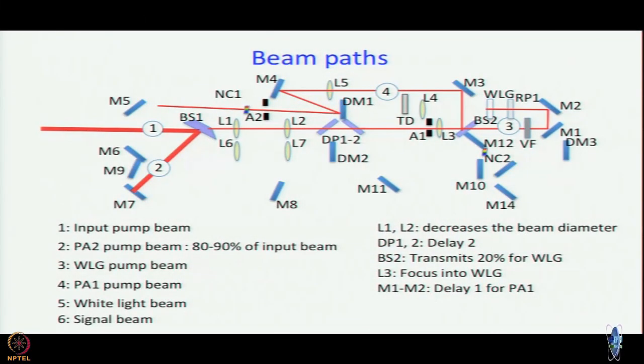In this module we hope to complete our discussion of an actual optical parametric amplifier, the one we use in our lab. To recap quickly, we have this input beam hitting beam splitter one, 80 to 90 percent of which is reflected onto M7, the remaining part goes straight using L1 and L2 pair of lenses which constitute a telescope.